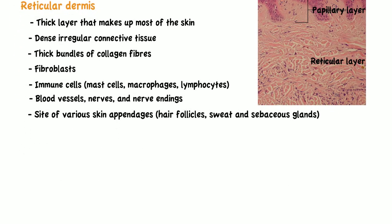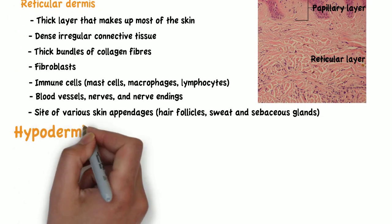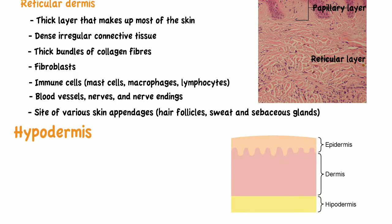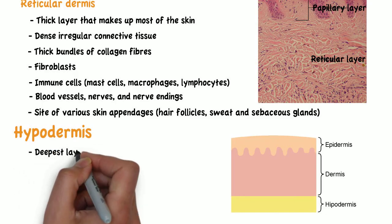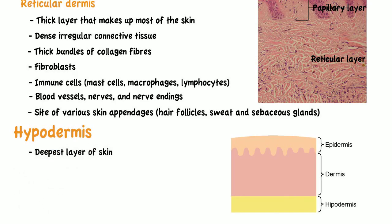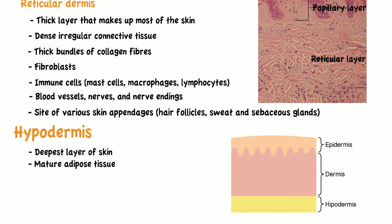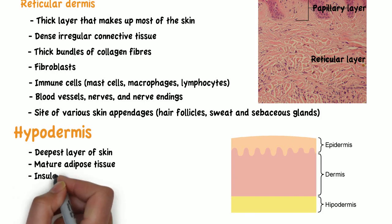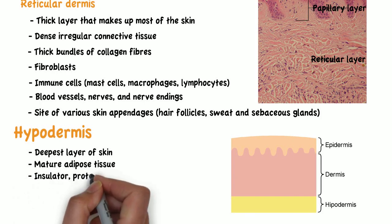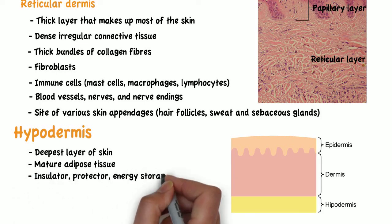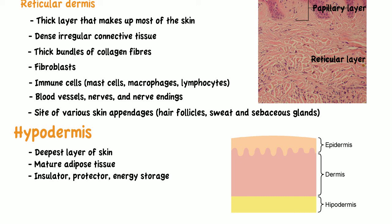The hypodermis is the deepest layer of skin and is composed of mature adipose tissue. It functions as an insulator, a protector, and as an energy storage site. The thickness of the hypodermis varies between individuals and different places of the body.